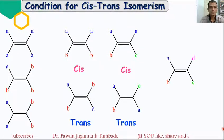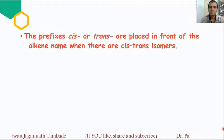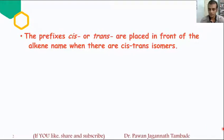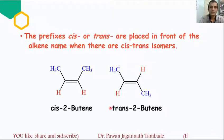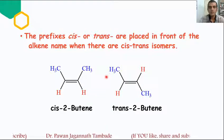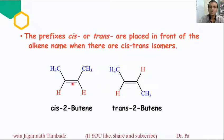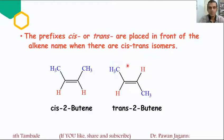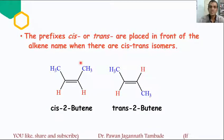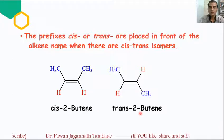If a molecule shows cis-trans isomerism, the prefixes 'cis' or 'trans' are placed in front of the name of that alkene. For example, in 2-butene, either the two CH3 groups are on the same side or on opposite sides. If the two similar groups are on the same side, the molecule is the cis isomer; if on opposite sides, it is the trans isomer. These molecules are named cis-2-butene and trans-2-butene respectively.